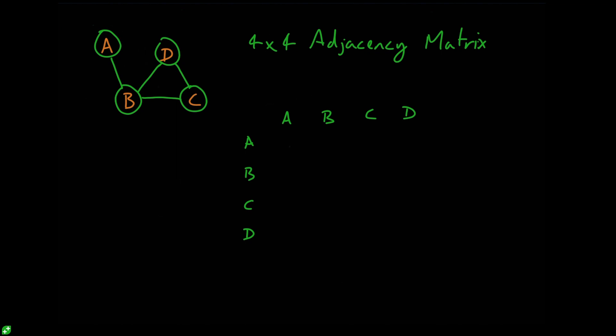And now we just need to fill in our matrix. So we'll start with the node A. We're going to say that the node can't connect to itself, it can only connect to other nodes. So it's not connected to A, but it is connected to B. So we'll add a one in there. And then it's not connected to C or D, so these will both be zero.